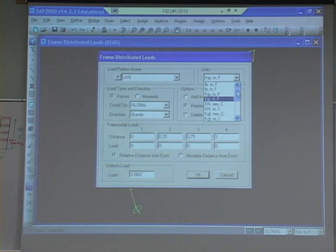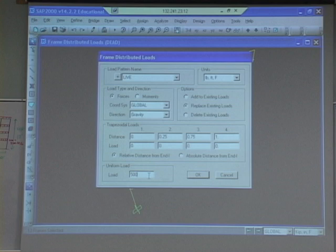I want to assign a live load. I want pounds and feet. And I want it to be 500. Right? And really, this would be maybe 600 or 650 or something from partitions. But we're just going to go with 500 for now.